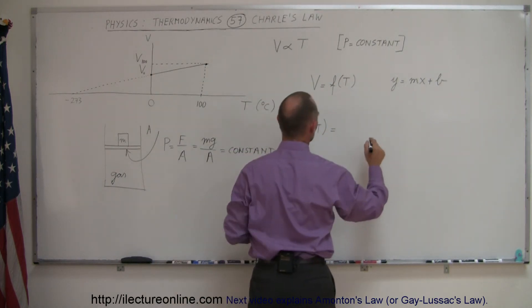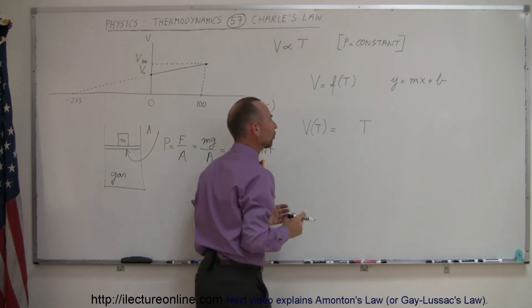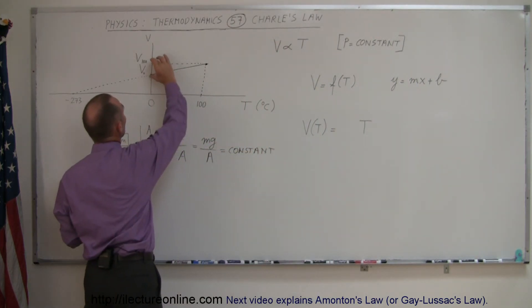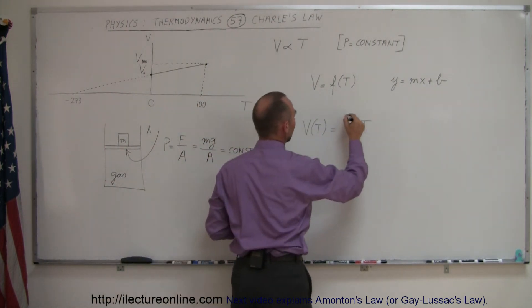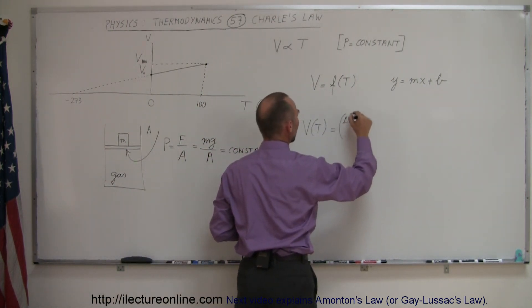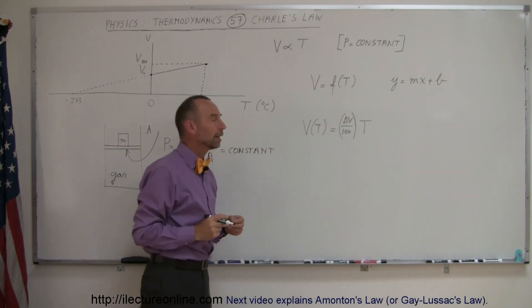Now, of course, the horizontal axis is temperature. And so what was going to be the slope? Well, the slope was going to be the change in the volume over the temperature. So that would be delta V, the change in the volume, over the change in the temperature, which would be 100 degrees centigrade.